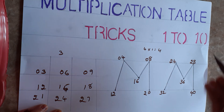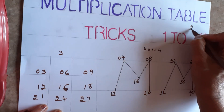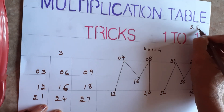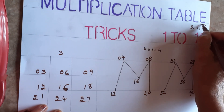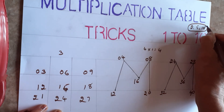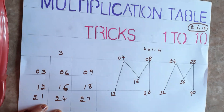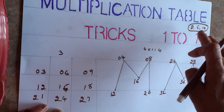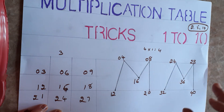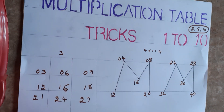Anyone already knows the 2, 5, and 10 tables, so there's no need to explain those. Now I'll tell you the sixth table and how to do it.